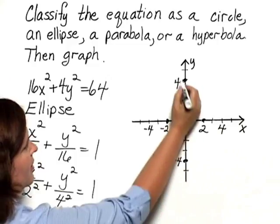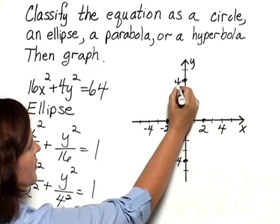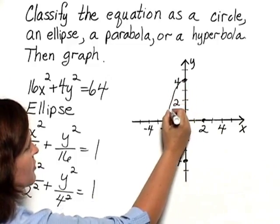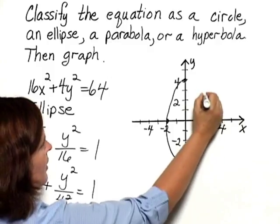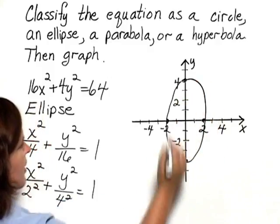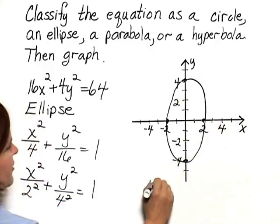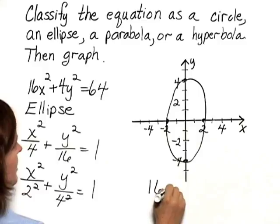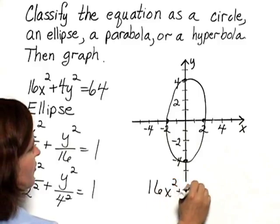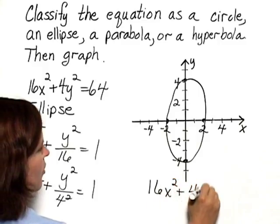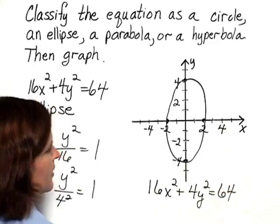And then I'm going to draw an ellipse through those points. And this is the graph of the ellipse 16x squared plus 4y squared equals 64.